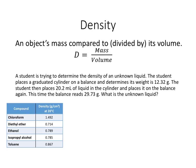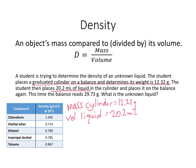So here's my first density problem. A student is trying to determine the density of an unknown liquid. The student places a graduated cylinder on a balance and determines its weight is 12.32 grams. So the mass of the cylinder is 12.32 grams. The student then places 20.2 milliliters of liquid. Volume of liquid is 20.2 milliliters in the cylinder and places it on the balance again. This time the balance reads 29.73 grams. Mass cylinder plus liquid is 29.73 grams.